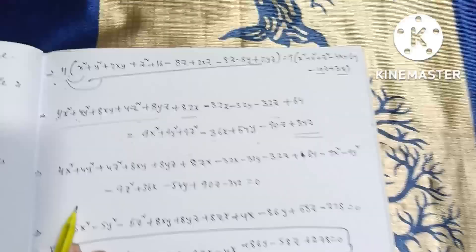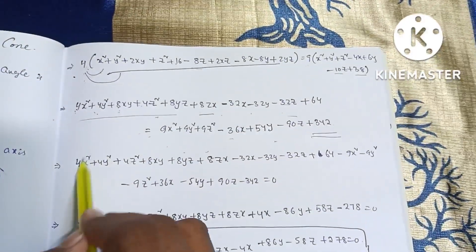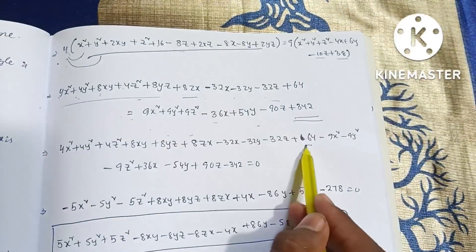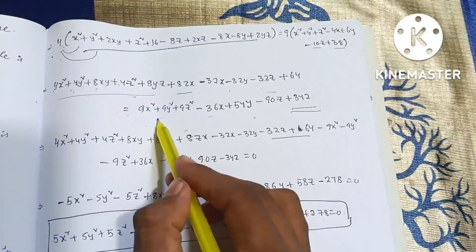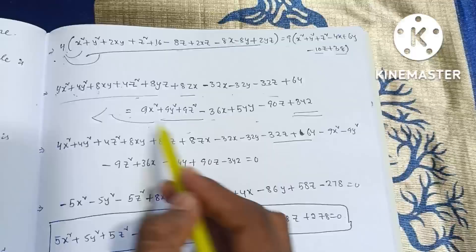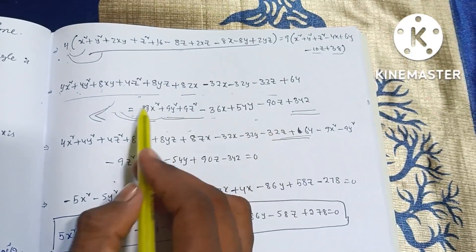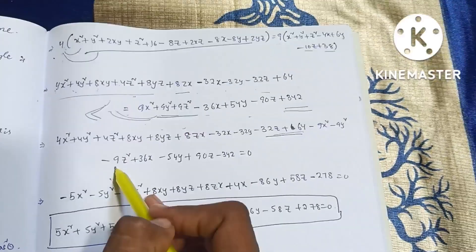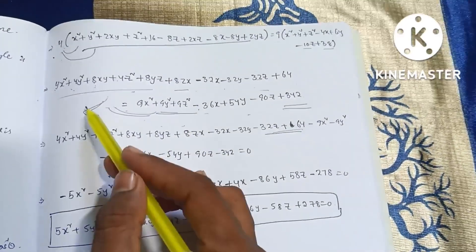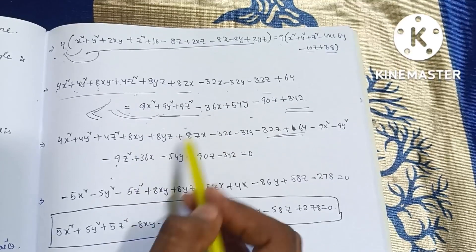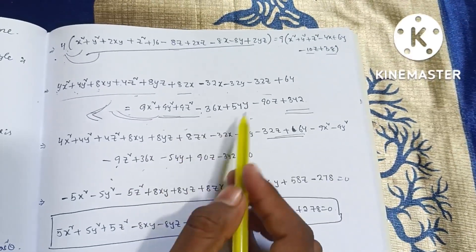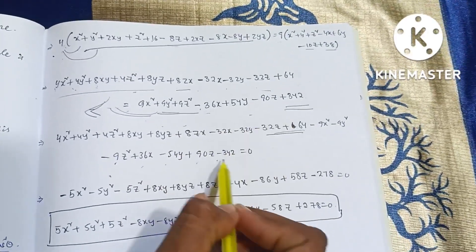So values. Same from 64. So I right side value left side, minus out. So minus 9x square, minus 9y square, minus 9z square. Plus 36x. Minus 54y, plus 90z, minus 342 is equal to 0.